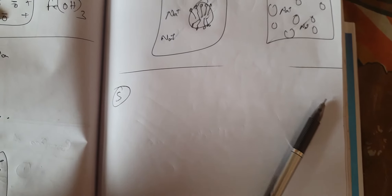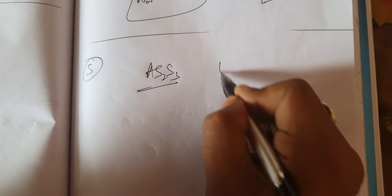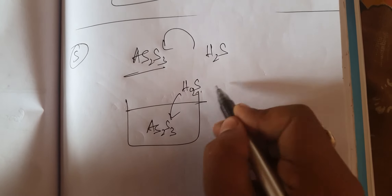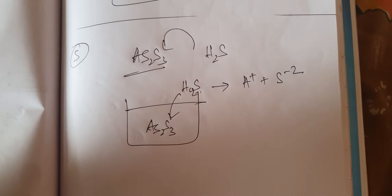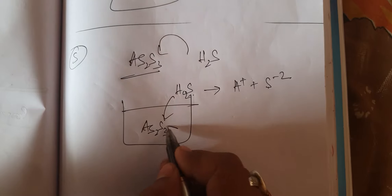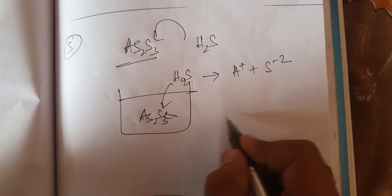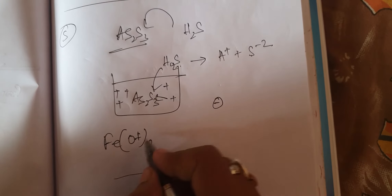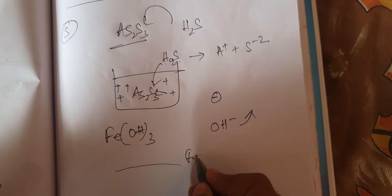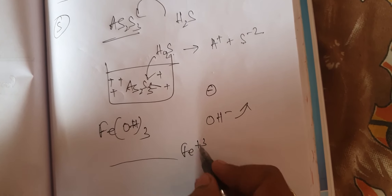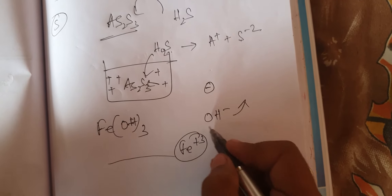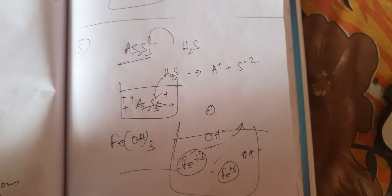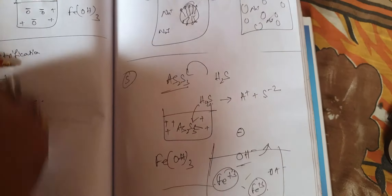The fifth method: in As₂S₃ medium, if H₂S is added, it breaks down into H⁺ and S²⁻. The S²⁻ is absorbed by the As₂S₃ colloidal particles, making them negatively charged, while the water medium becomes positively charged. In Fe(OH)₃, the OH⁻ dissolves in water and Fe³⁺ remains, so the colloidal dispersed phase becomes positively charged and the dispersion medium becomes negatively charged.